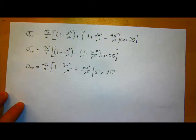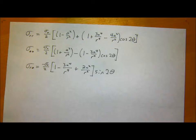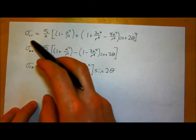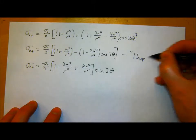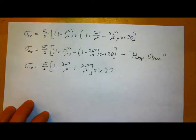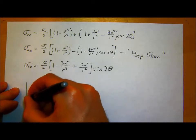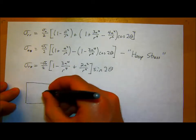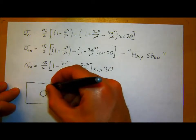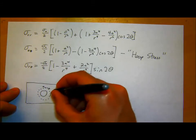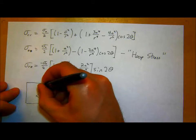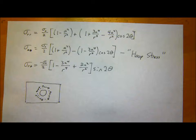The sigma-theta-theta term is also known as the hoop stress. If I'm looking at the stress in a body around a circle, the theta-theta component is always acting tangentially — pulling on that ring around your point O. So when I say hoop stress, I'm talking about sigma-theta-theta.